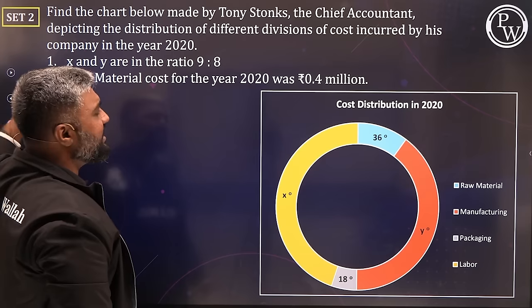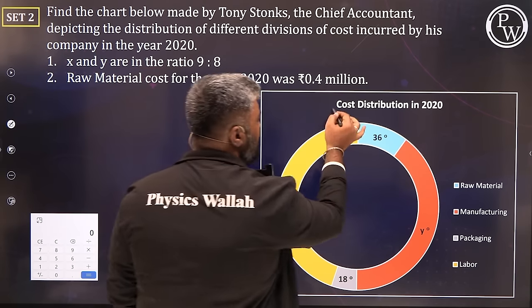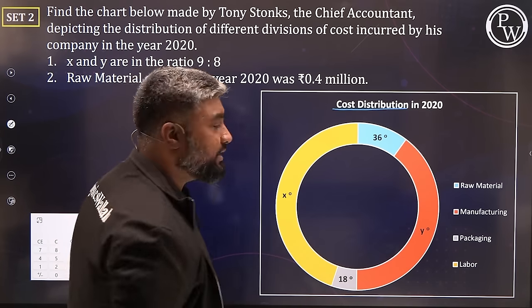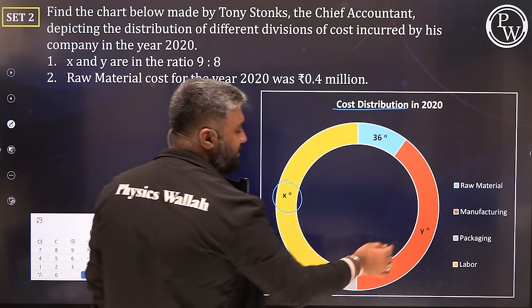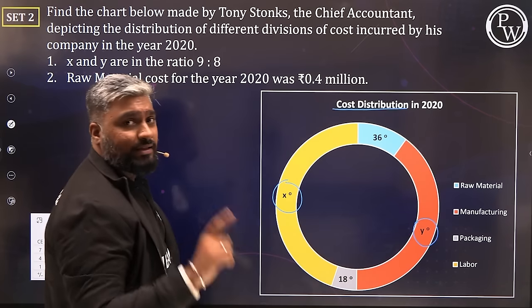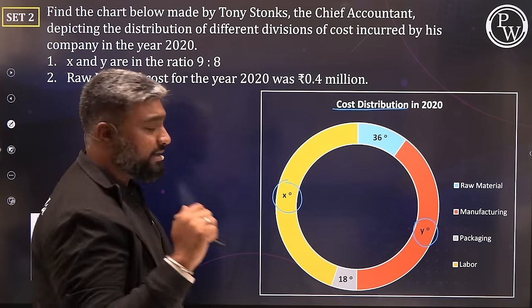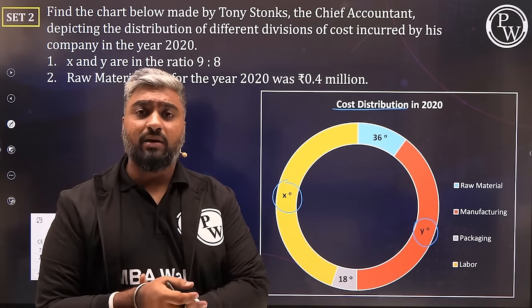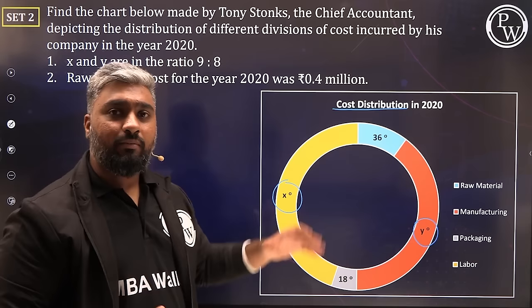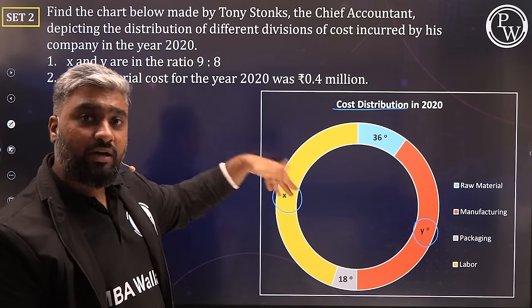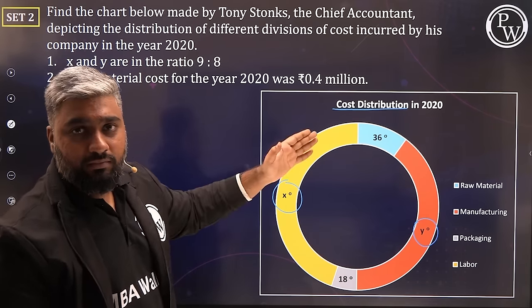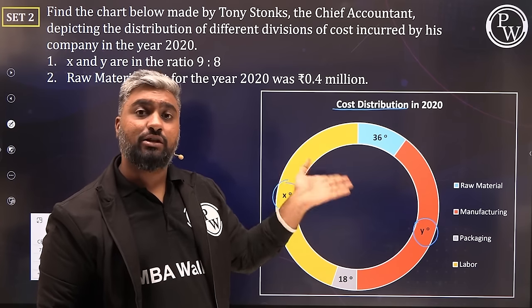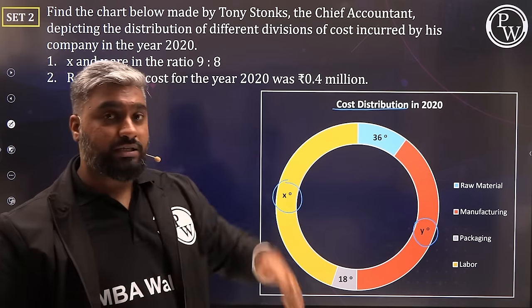Looking at the chart: it shows cost distribution with four divisions, and we notice there are X degrees and Y degrees — meaning some unknowns exist. This is not a pure DI question; it's a logic-based DI where you solve a small puzzle first to get the complete data, then use that for calculations. There are missing pieces in the data — find those, get the final data, and then use it for calculation.